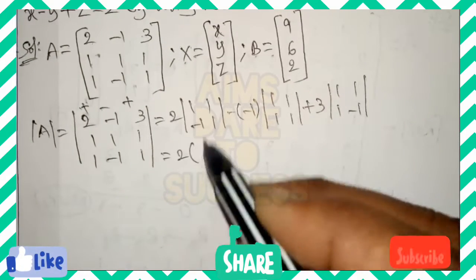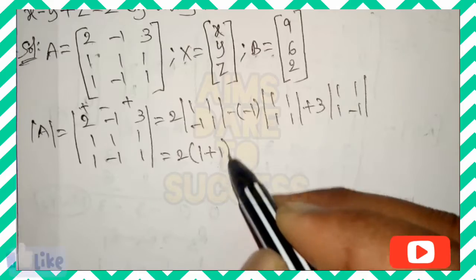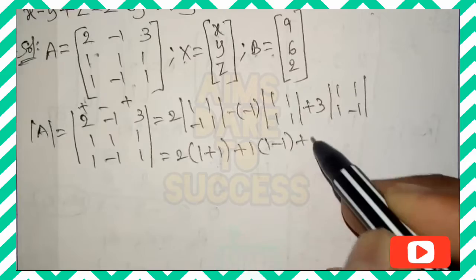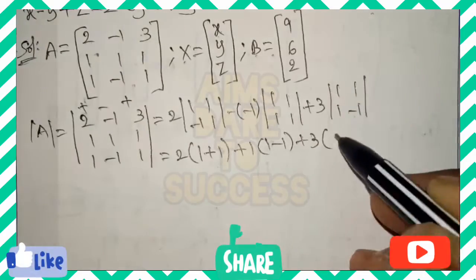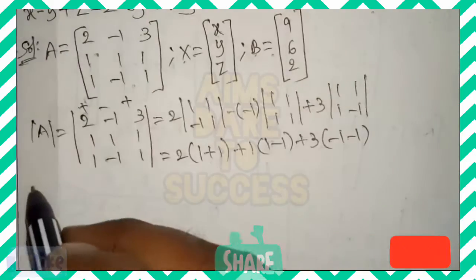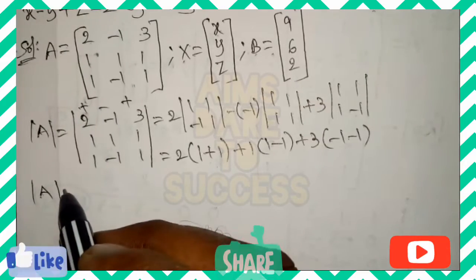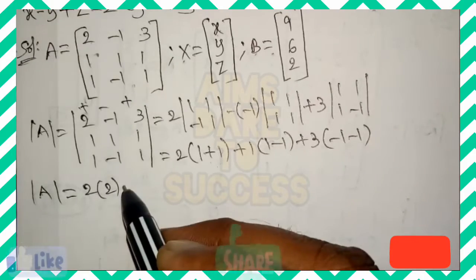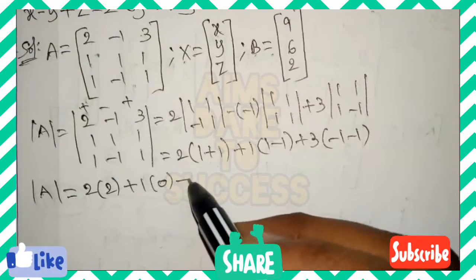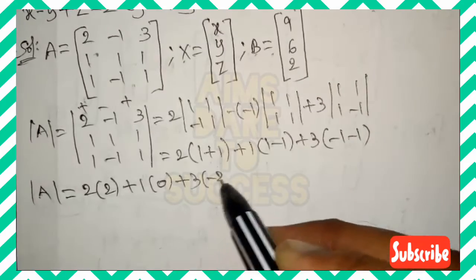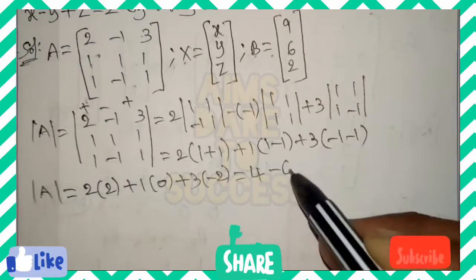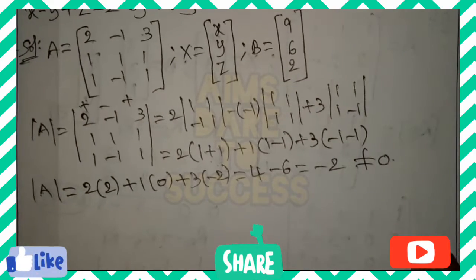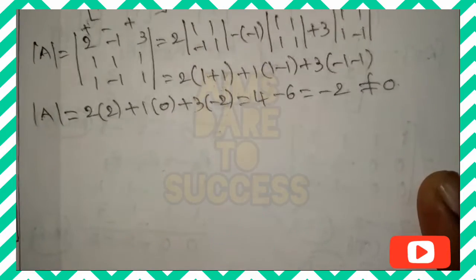Expanding the determinant using the plus/minus/plus sign rule and applying ad minus bc: 2 into (1×1 − 1×(−1)) plus (−1) into (1×1 − 1×1) plus 3 into (1×(−1) − 1×1). That gives 2×2 plus 1×0 plus 3×(−2), which is 4 plus 0 minus 6, so det(A) equals minus 2.